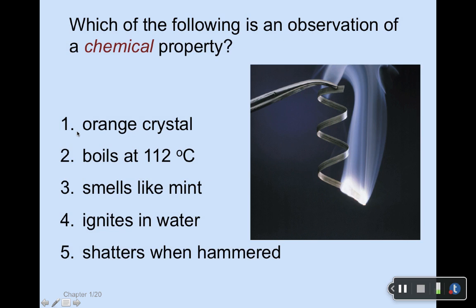Next example — which of the following is an observation of a chemical property? An orange crystal; it boils at 112°C; it smells like mint; it ignites in water; it shatters when hammered. Physical properties have to do only with changes of state or observable characteristics. Shattering is physical. Boiling is just changing a state. An orange crystal is just describing what something looks like. Smell is again a physical property. So something igniting in water would be the chemical property.